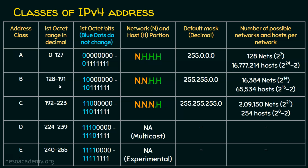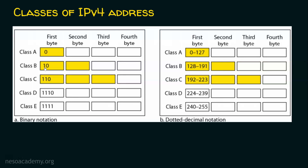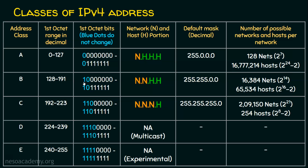For Class B, the first two bits are fixed as 1,0, leaving six remaining bits. We are concerned only with the first octet to find the class. The starting value is 1,0 followed by six zeros, which gives 128 in decimal. The ending is 1,0 followed by six ones, which gives 191. So Class B ranges from 128 to 191.